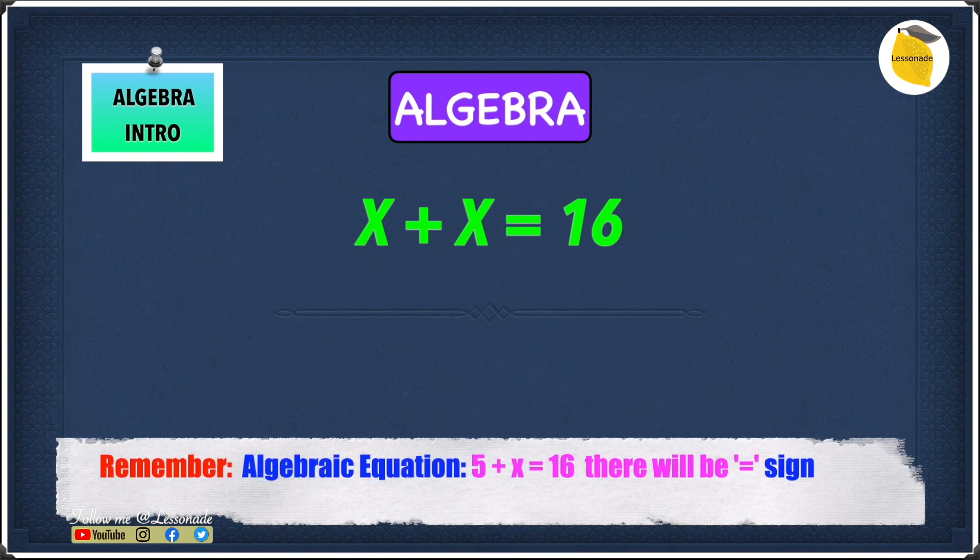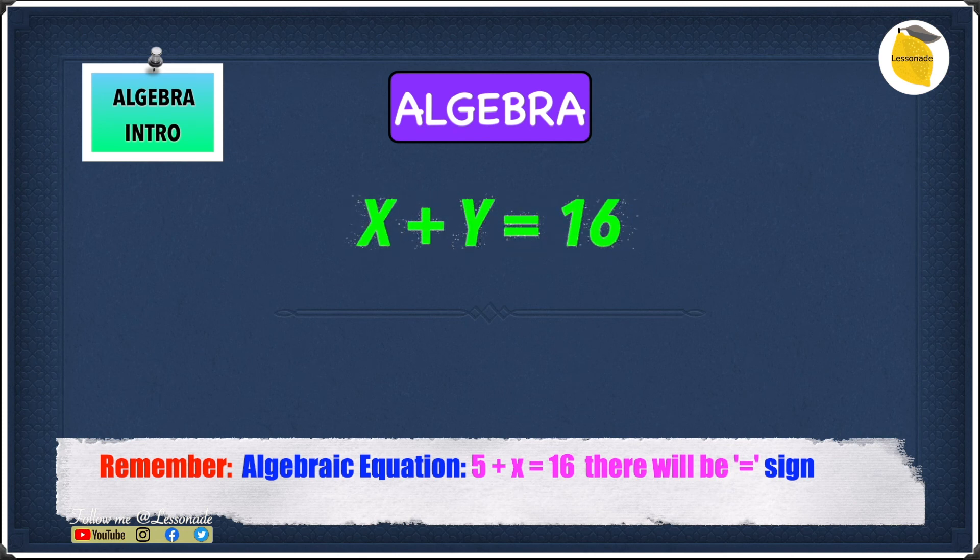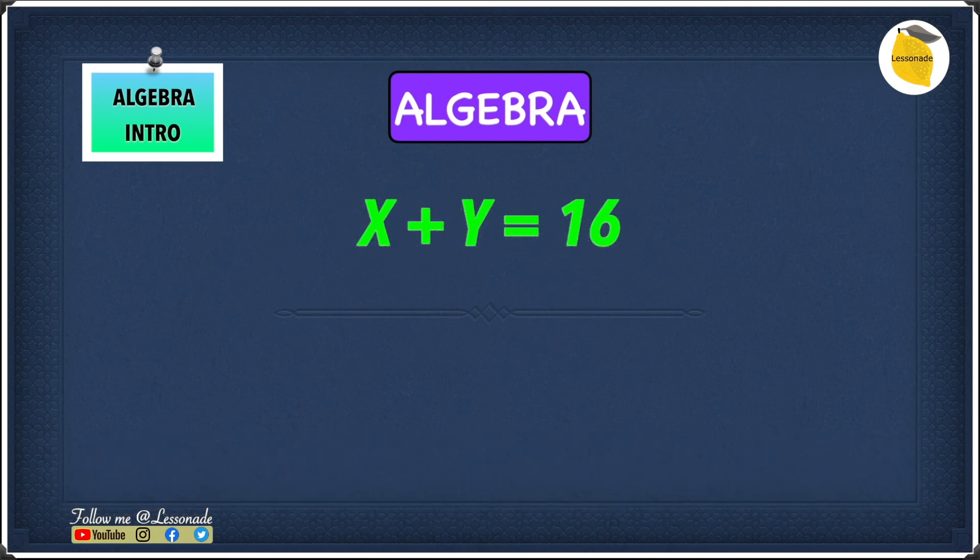So if you do want to add 16 with two different numbers instead of the same, you don't use the two same symbols, you use two different symbols. So rather than x plus x, you will instead write it as x plus y, because they're both two different symbols. So this means they both represent two different numbers. x plus y equals 16.